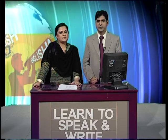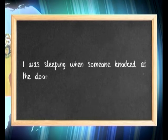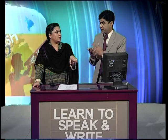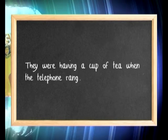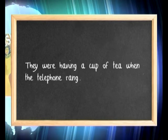We also use this tense to talk about an action that was already going on when another action interrupted it. For example: 'I was sleeping when someone knocked at the door.' There was an interruption — I woke up. The process of sleep was disturbed or interrupted. One action was already going on, and some other incident happened in simple past tense that interrupted it. Another example: 'They were having a cup of tea when the telephone rang.'